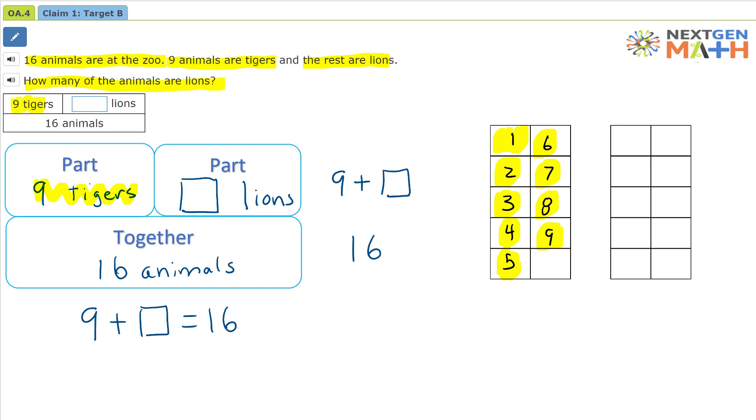There's our 9 tigers. In the problem, it says that there are 16 animals at the zoo. There's a total of 16 animals. So we already counted 9 tigers. Now we're going to count the rest of the animals. There's 10, 11, 12, 13, 14, 15, 16. There's the 16 animals.